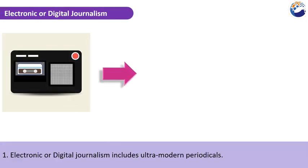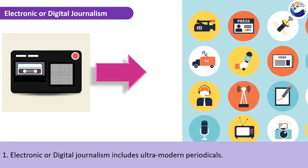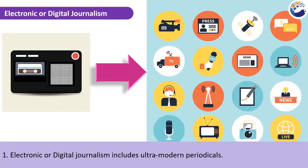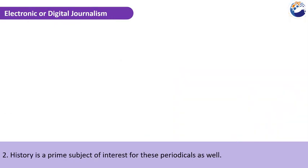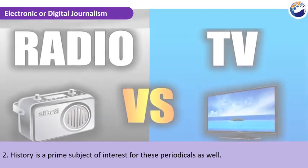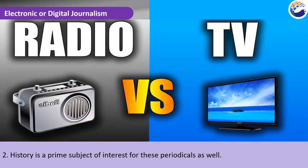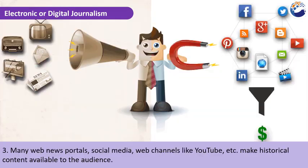Electronic or Digital Journalism includes ultra-modern periodicals. History is a prime subject of interest for these periodicals as well. Many web news portals, social media, and web channels like YouTube make historical content available to the audience.